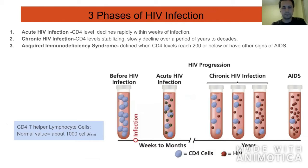There are three phases of HIV infection. The first is called the acute HIV infection, which we'll discuss next. The second is the chronic HIV infection, and the last is AIDS — acquired immunodeficiency syndrome. A normal person has about 1,000 CD4 T helper cells per cubic millimeter of blood, and we'll talk about what happens to those levels as the HIV infection progresses.